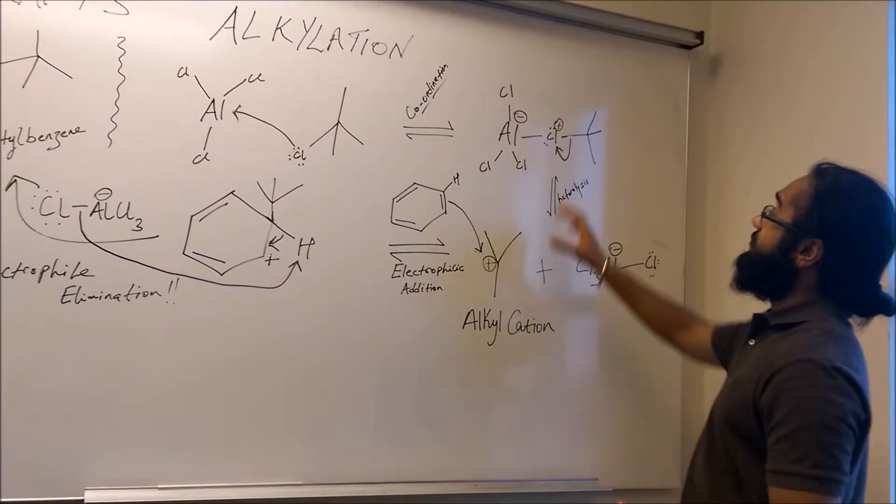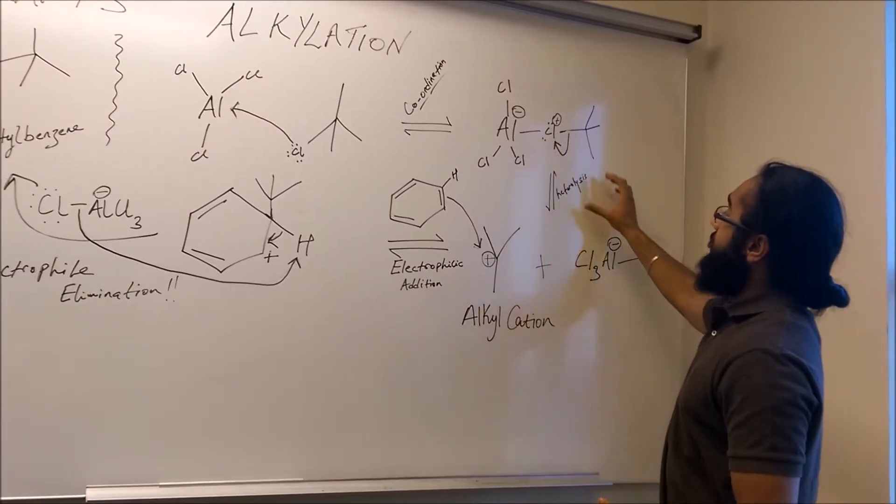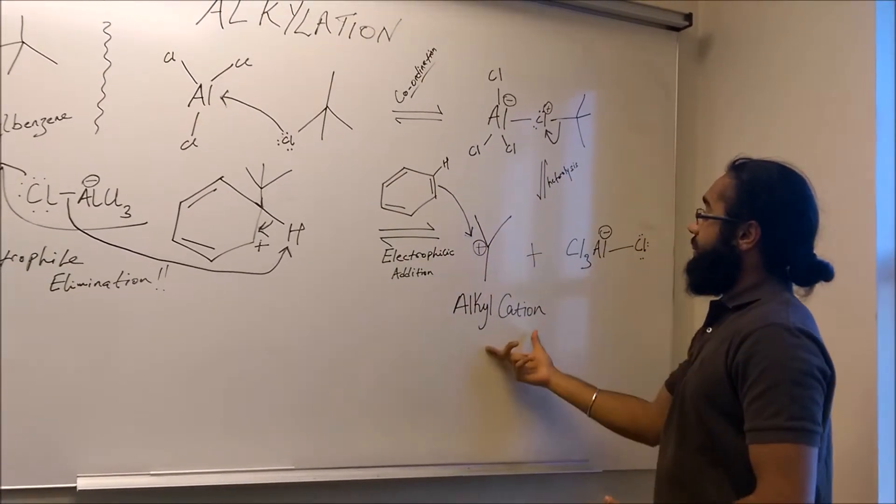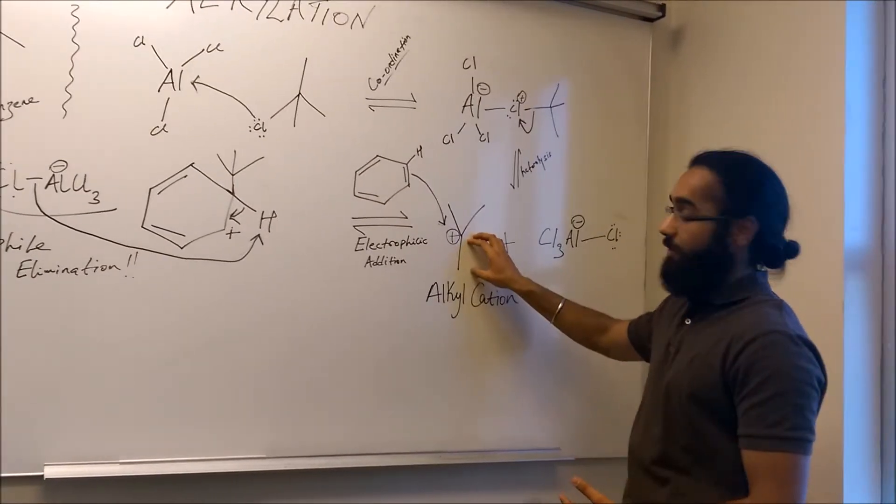So the zwitterion being highly unstable, it's going to undergo hydrolysis making our electrophile, specifically making the alkyl cation, which is a really good electrophile.